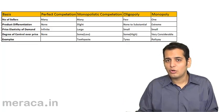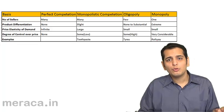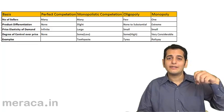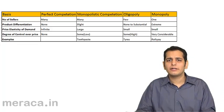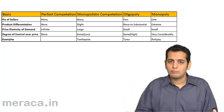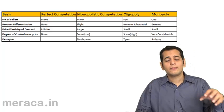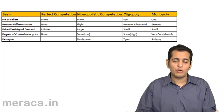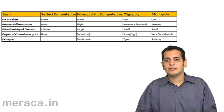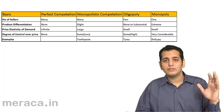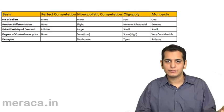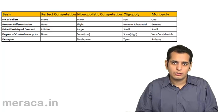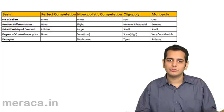Finally, we come to monopoly. 'Mono' means one, so in this market there is only one seller who dictates the market, while there are a large number of buyers. Since the seller is the only seller, he makes the price, dictates the terms, conditions, and price. The market operates as per his wishes.